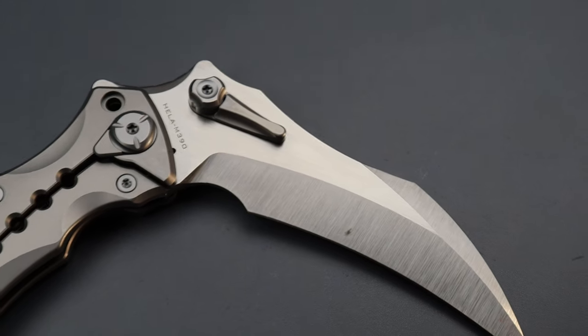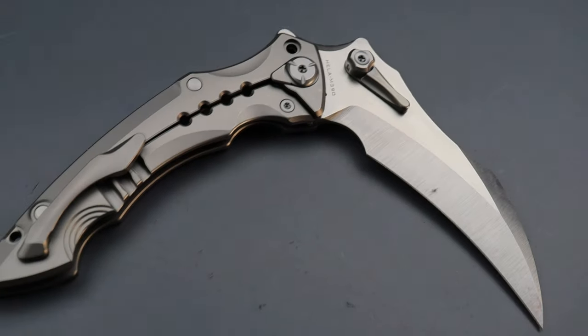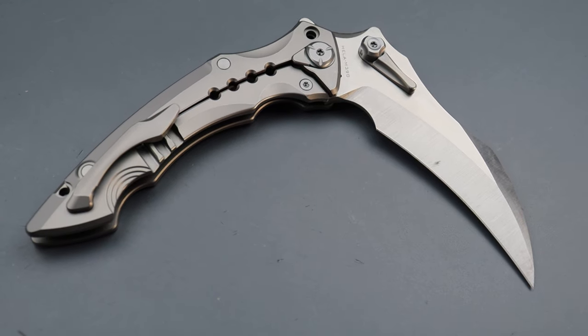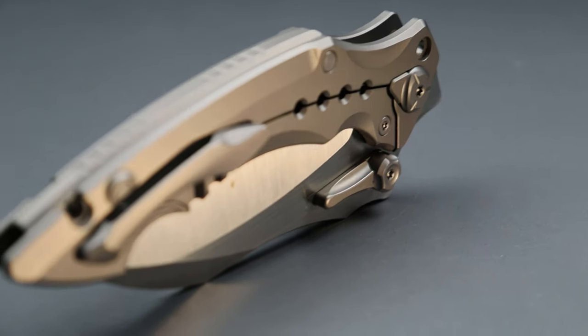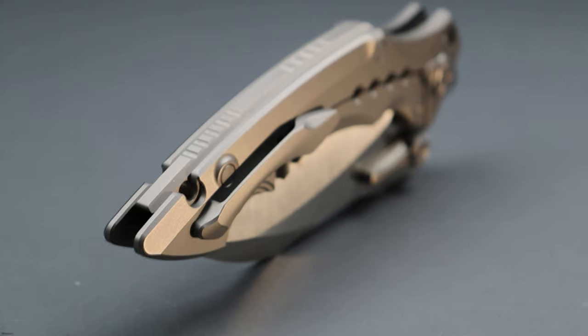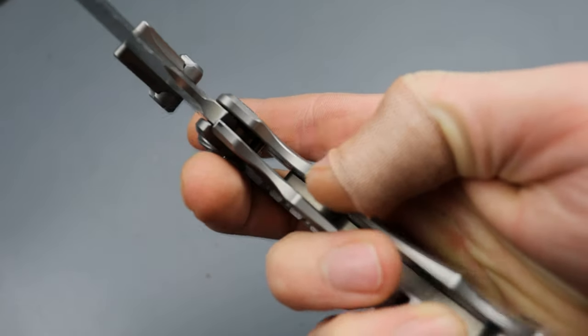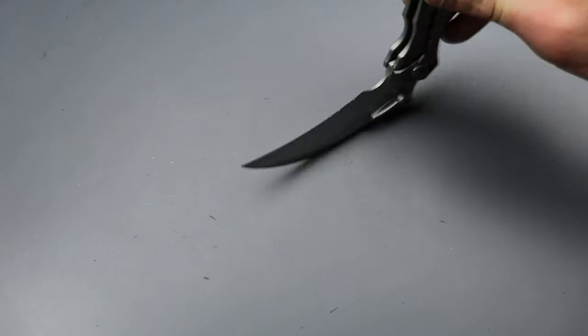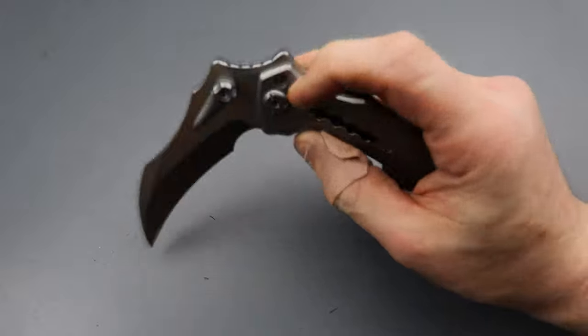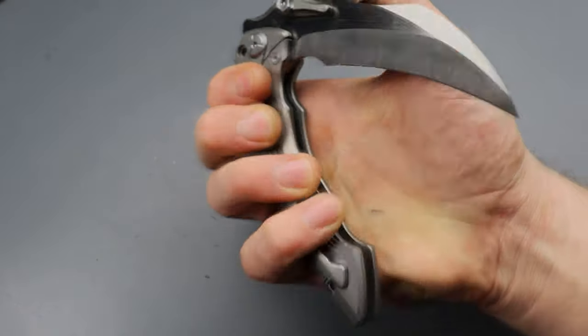So you can do the gravity drop very easily if you were going to get into the reverse grip. Full titanium backspacer. The clip looks like it's going to work great. Good access to the lock bar, nice comfortable disengagement. Feels like a nice solid engagement too. And then you still have the secondary lock as well if you are going to spike it into anything.